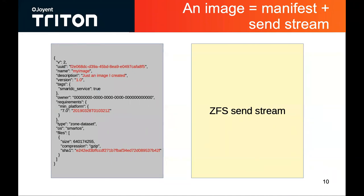That fundamental aspect is this concept of an image. An image is essentially what delivers the file system that a virtual machine making up the system is backed by. An image consists of two things. Here in this example, I've got an image manifest, which is the metadata that describes the image. An image has got a UUID, a name, a description, and a version. Here it's also got a minimum platform, which talks about the minimum version of SmartOS that we need to run on.